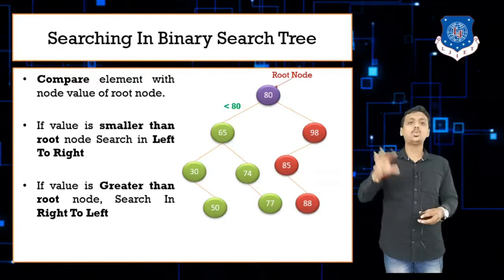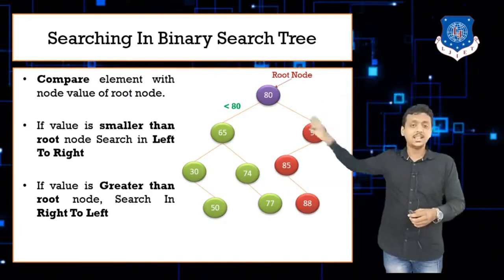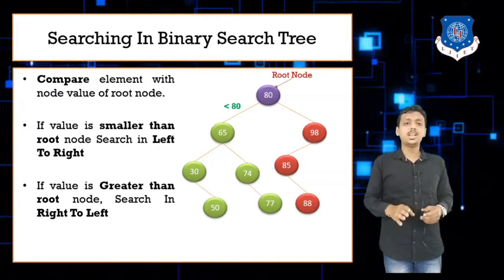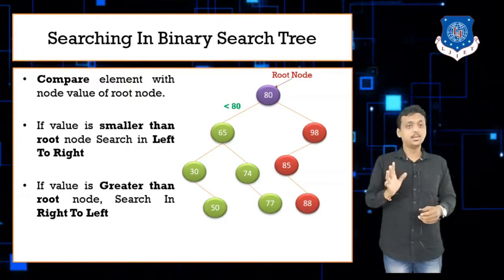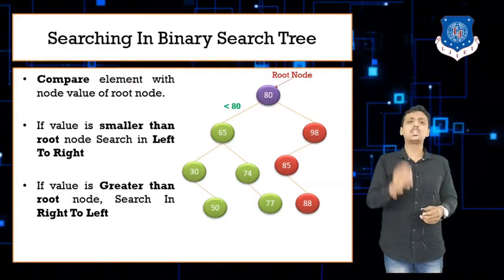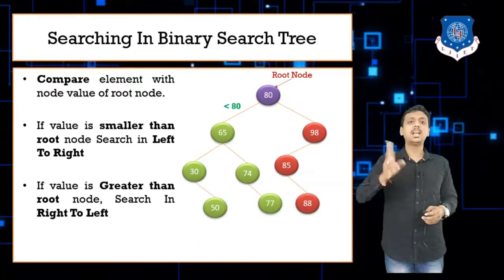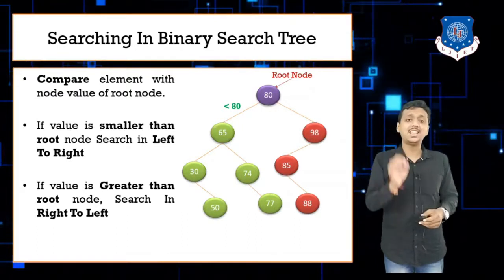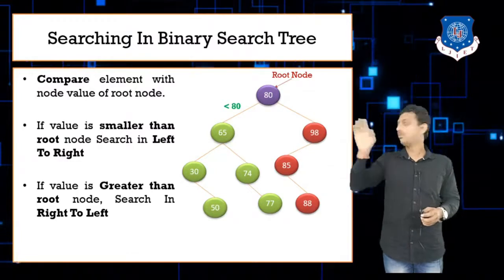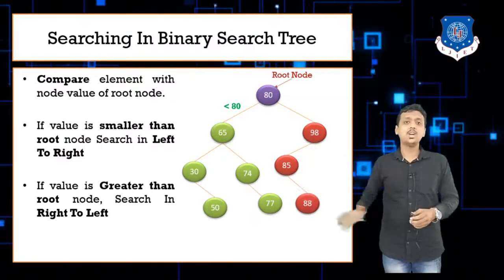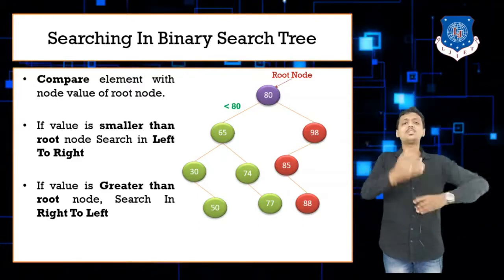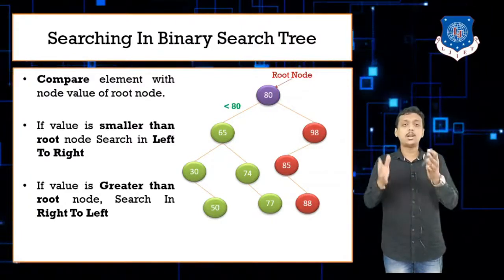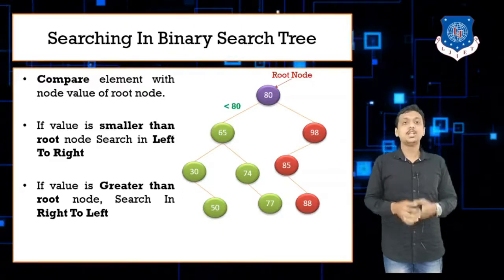To search 85, compare 85 with 80 — 85 is greater than 80, so move to the right side. On the right side of 80 we find 98. Compare 85 with 98 — 85 is less than 98, so move to the left side of 98. On the left side of 98, compare 85 with 85 and you find your value.